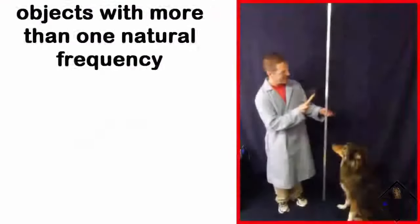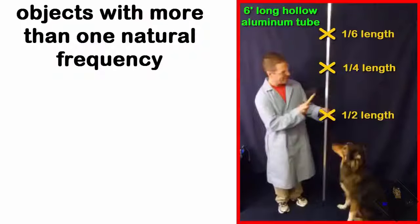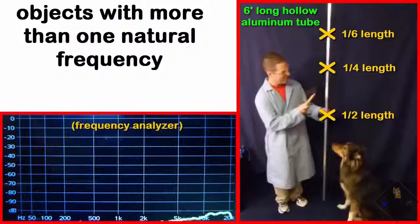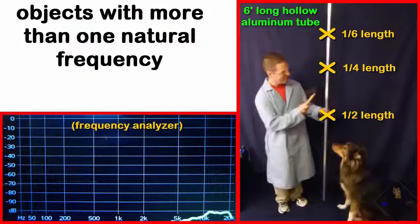Many objects have more than one natural or resonant frequency of vibration. Dr. Smith has a six-foot long hollow aluminum tube. He is going to hold the tube at different positions while striking the tube with a rubber mallet. The resonant frequencies that exist will be revealed on the frequency analyzer.